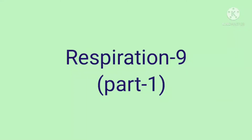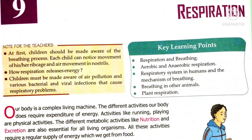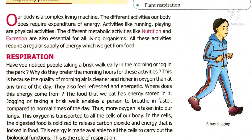Let's move on to chapter 9, on page 130 and 131. We know that our body is a complex living organism. There are different activities which are done by us — running, walking, teaching, listening. For all these activities, we need energy. How do we get energy? This energy we get from the food which we eat, and we obtain it in the process of respiration.